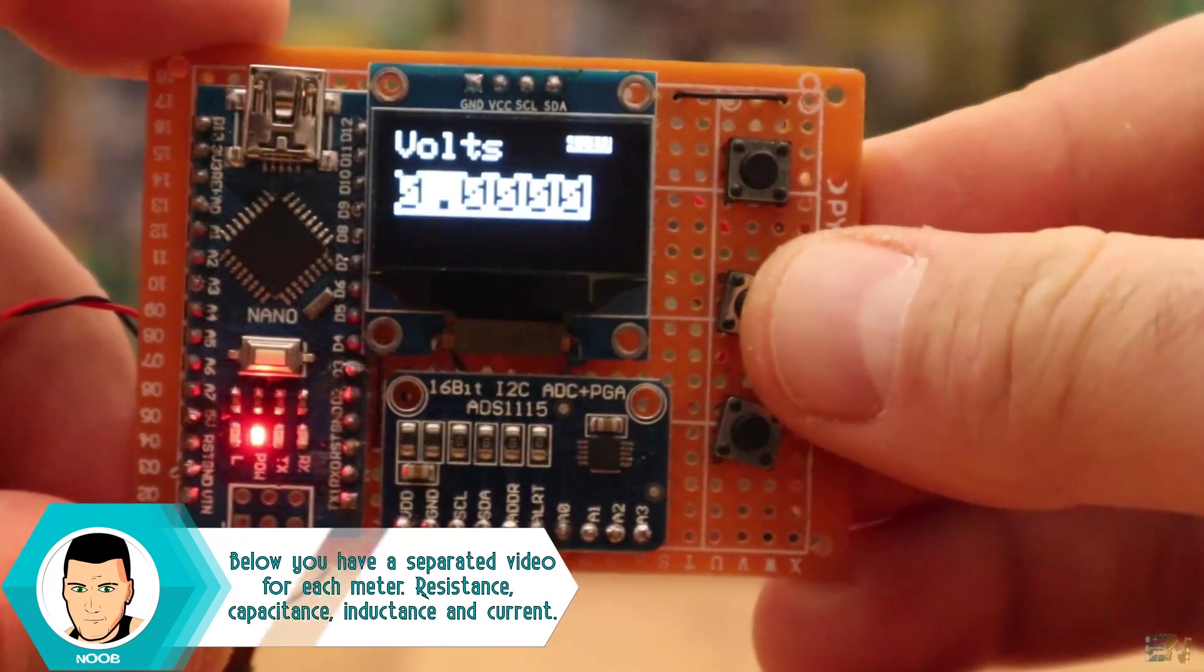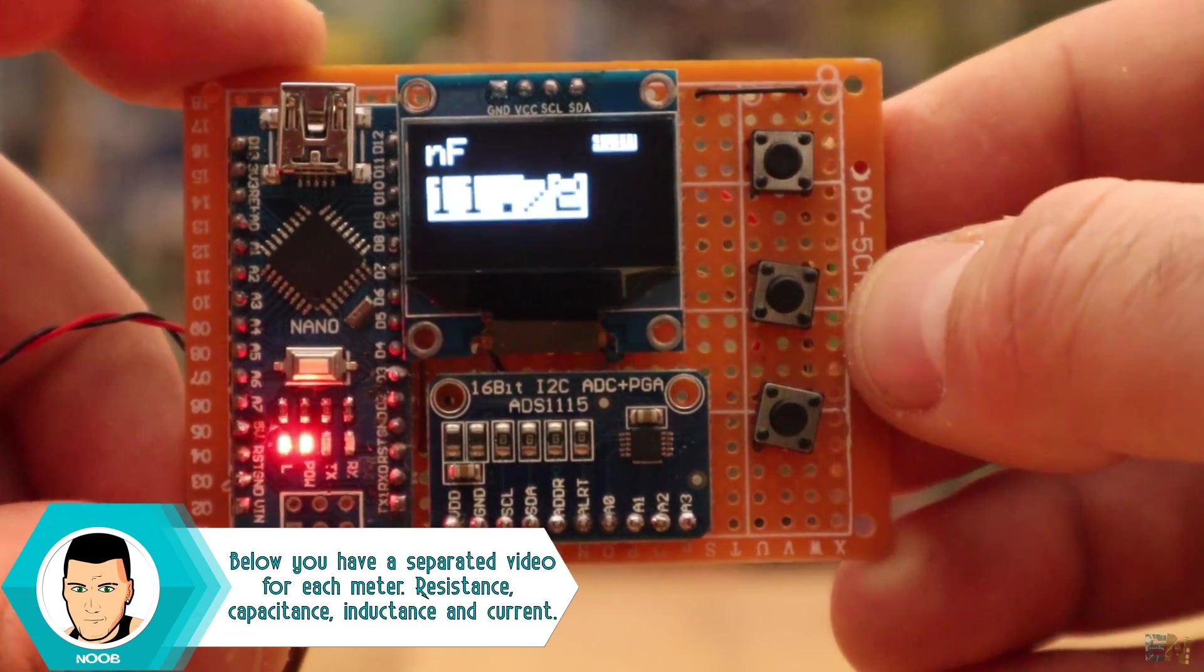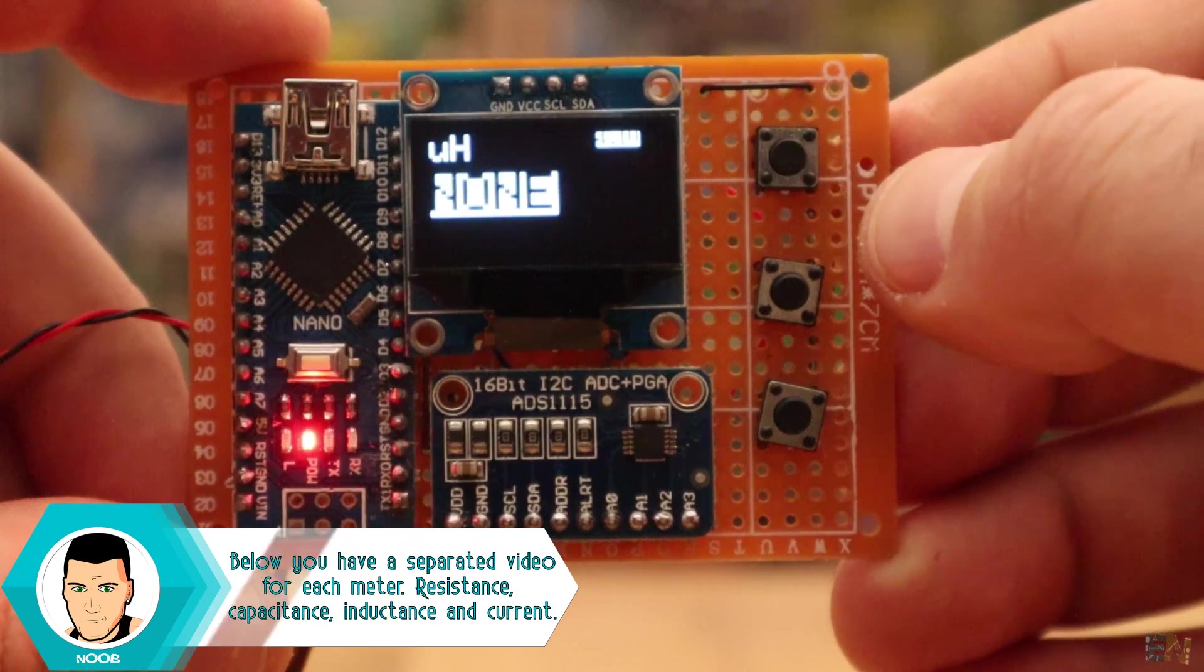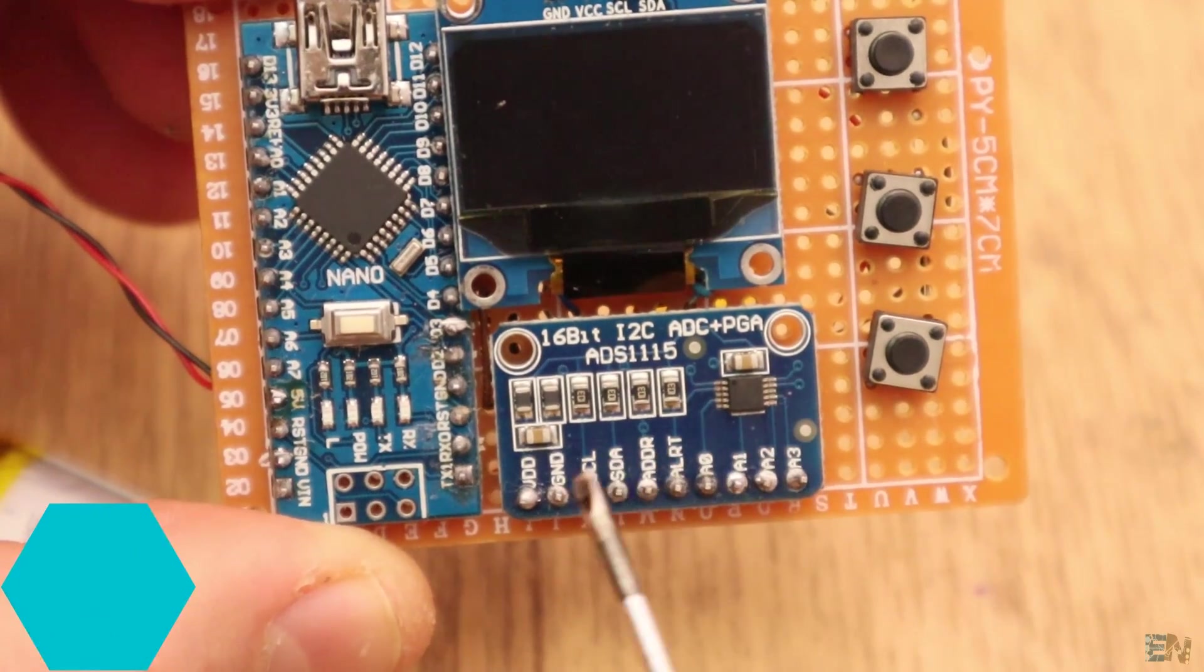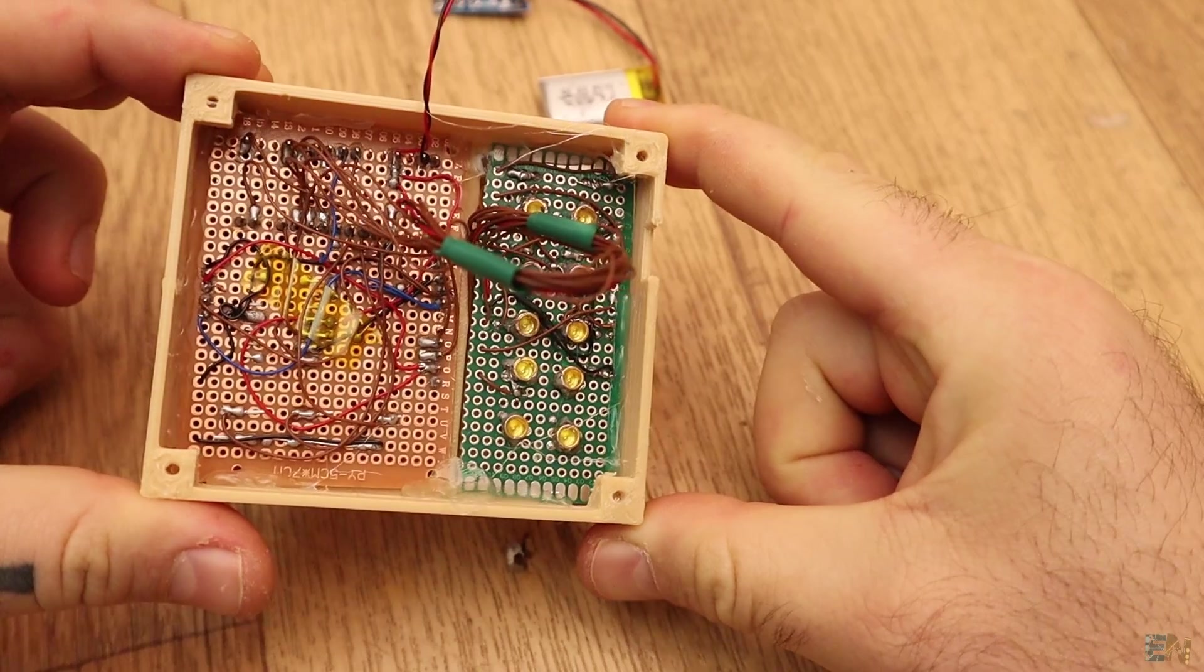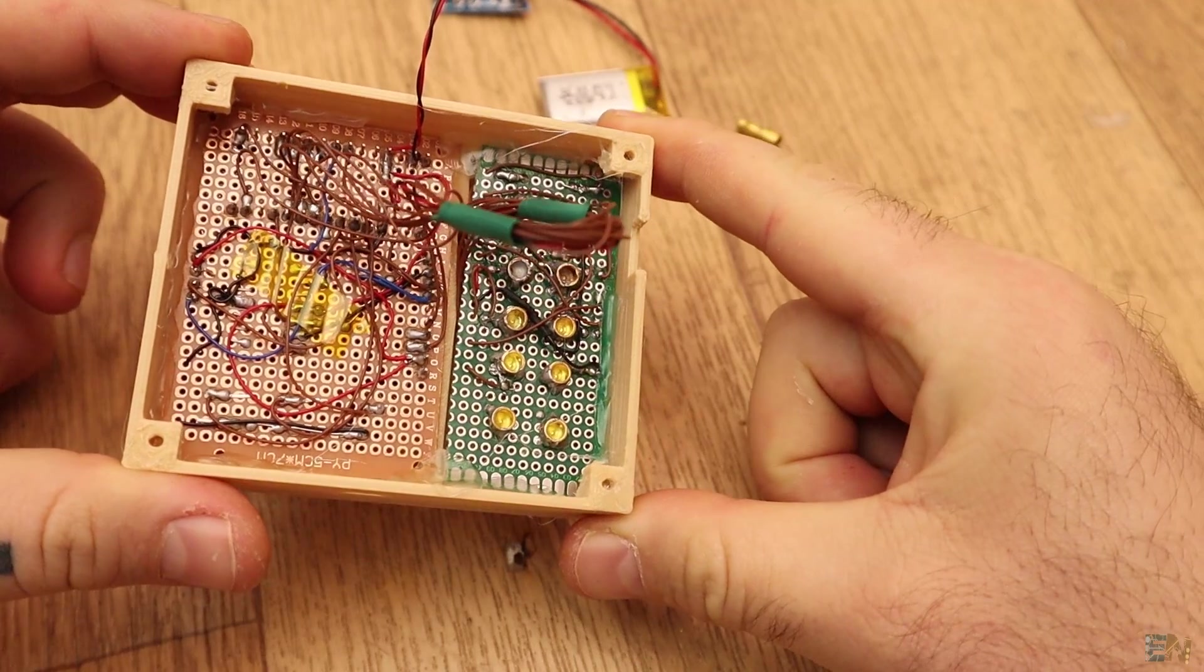So we have voltage, resistance, capacitance, inductance and current. The high precision is given by this 16-bit ADC, so a resolution of around 100uV.